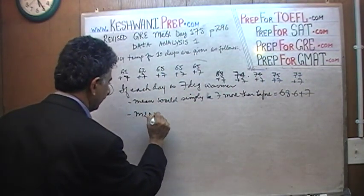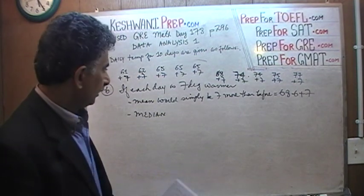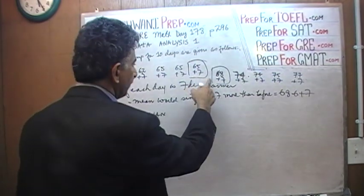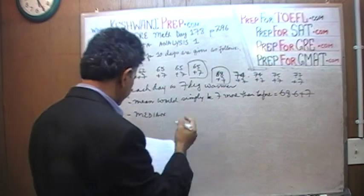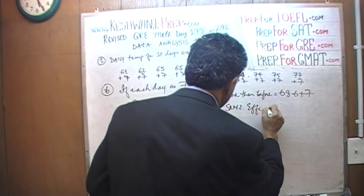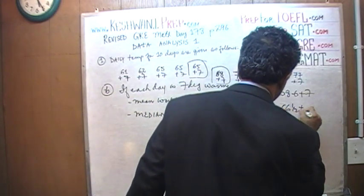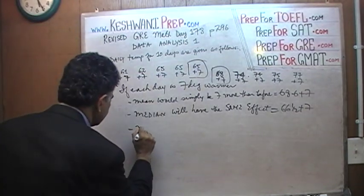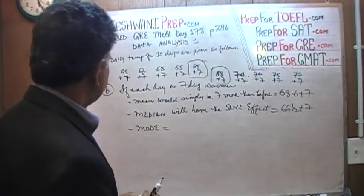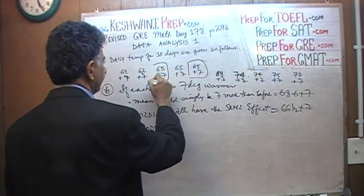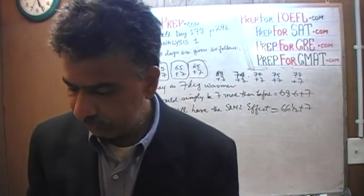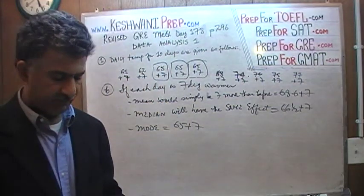What's going to happen to the median? The median was the average of 65 and 68 before. Now it's going to be the average of 65 plus 7 and 68 plus 7. Since they are both going up by 7, the median will also go up by 7 — so it's 66.5 plus 7. The mode: the most commonly occurring observations are the same three 65s as before, but now every one of them is 7 more — so 65 plus 7 is your mode. In other words, the mean, median, and mode all change by the same amount.